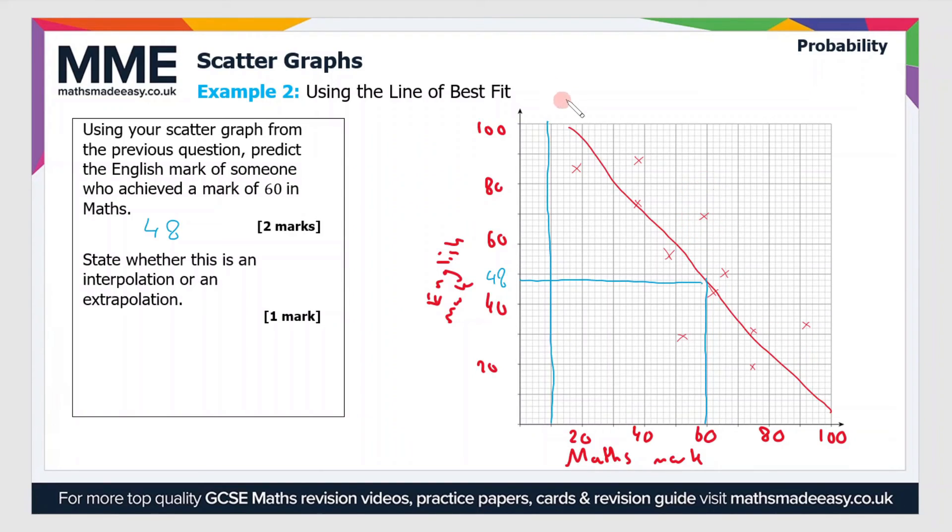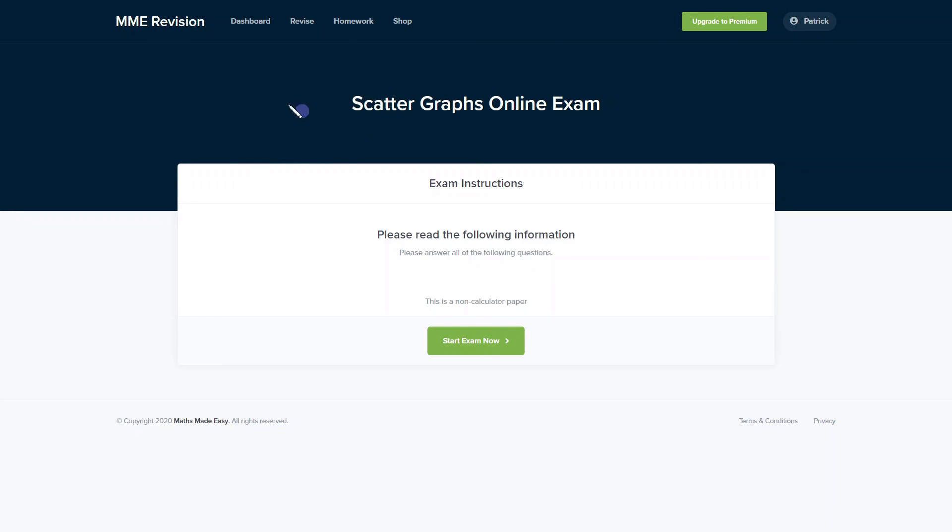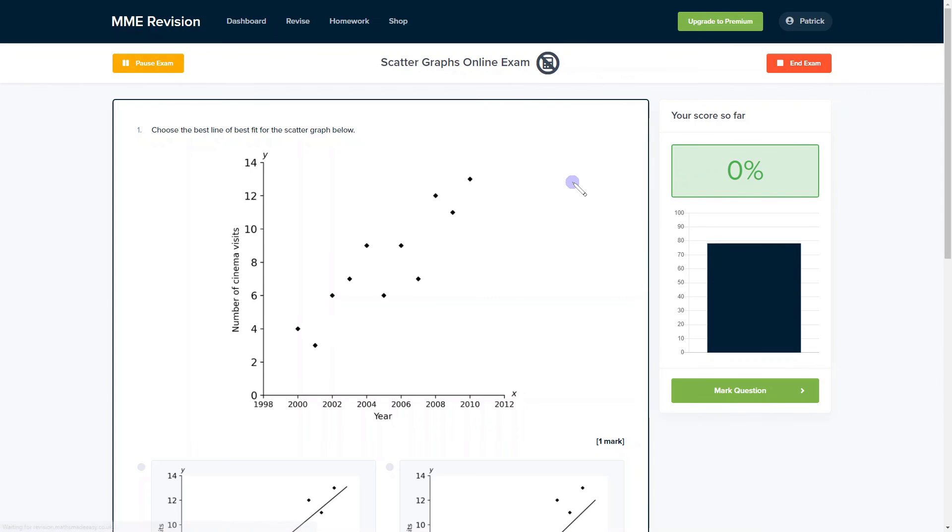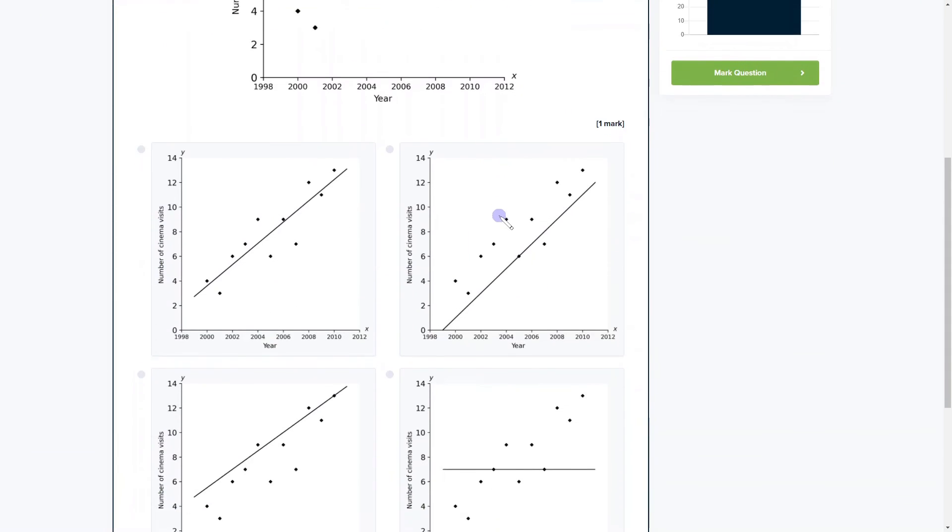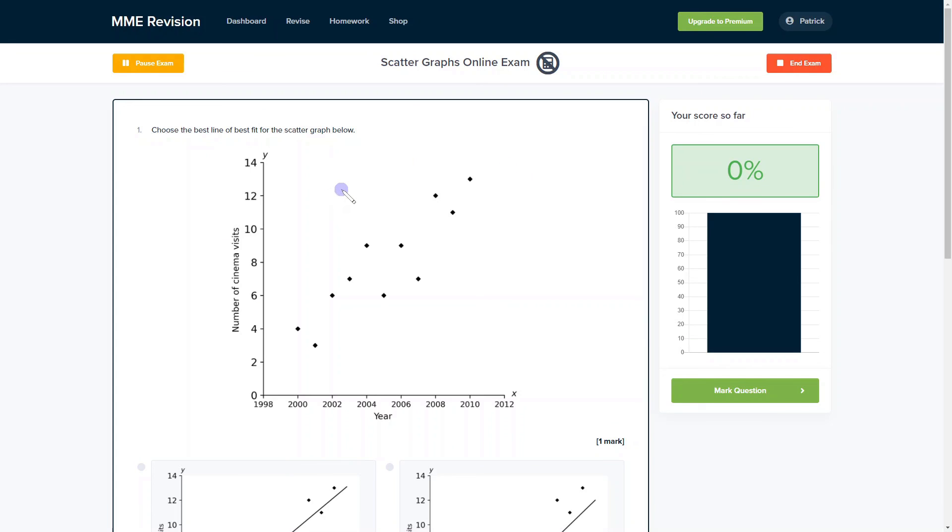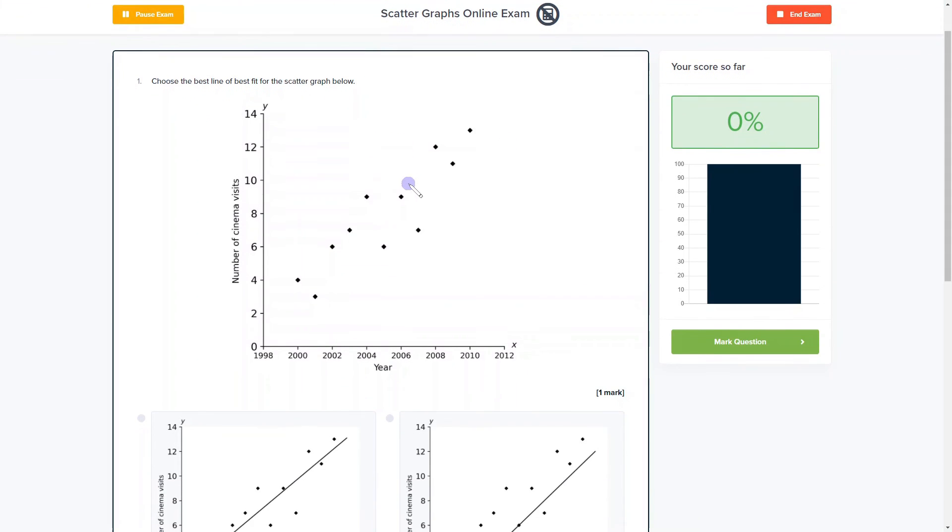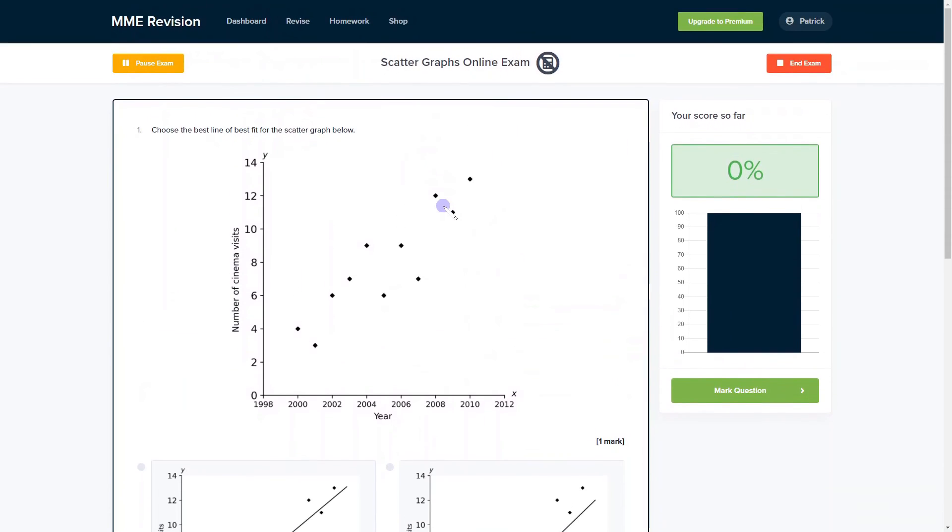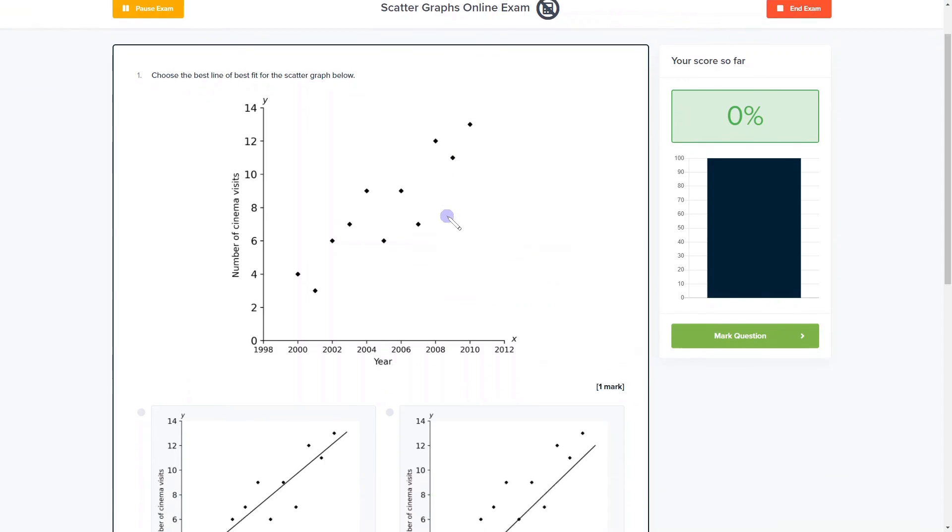If you want to practice some scatter graphs exam-style questions, why not have a go with our online exam? It's available through our revision platform. If you take the test you'll find loads of different questions to have a go at and you receive instant feedback on all of them. This is really useful if you want to find out where your strengths are, where your weaknesses are, and how you can improve quickly. If you're interested, click the link below and it will take you straight there.